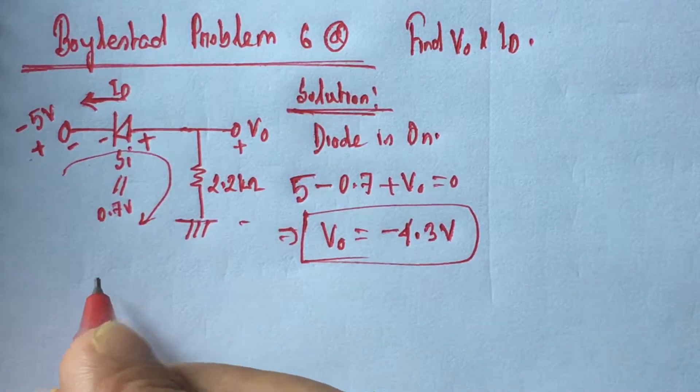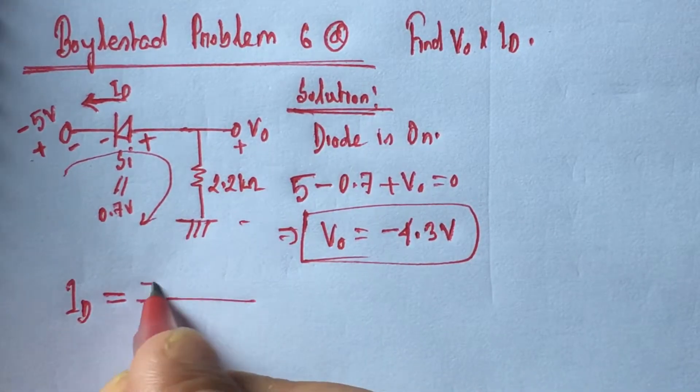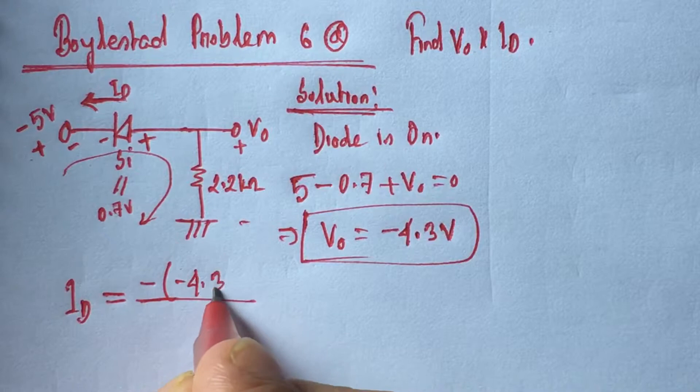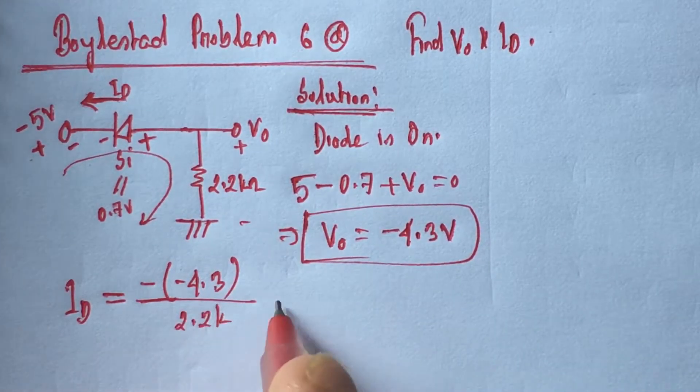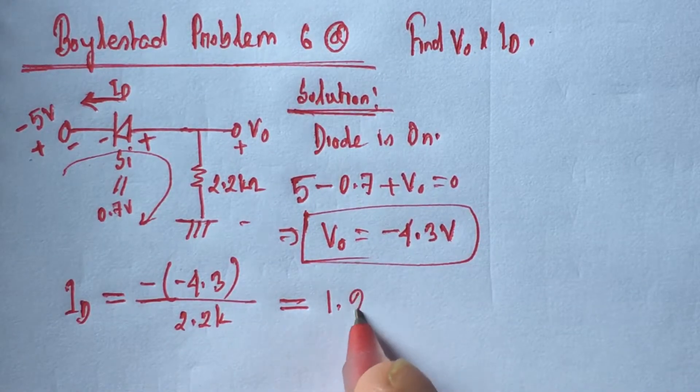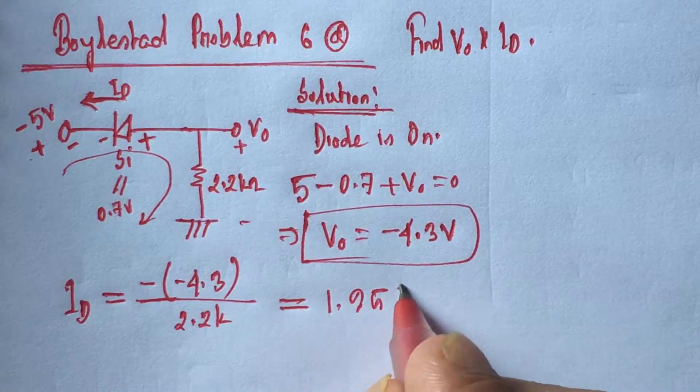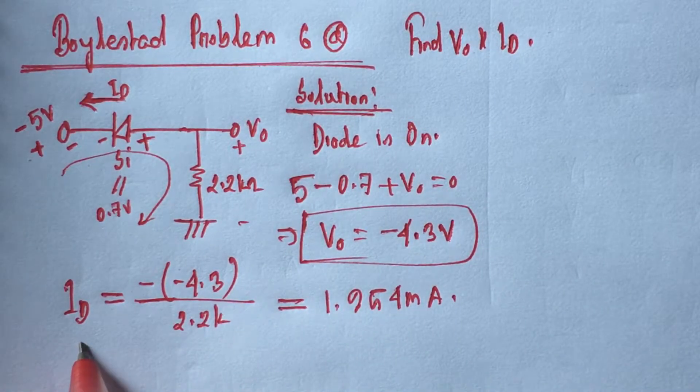So current ID will be the voltage minus 4.3 divided by this resistance 2.2 kilohms, that is 1.954 milliamperes.